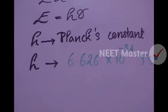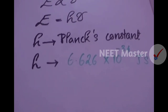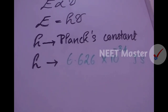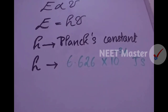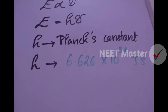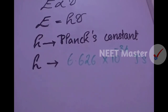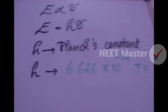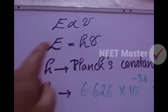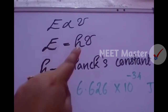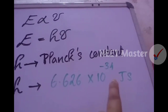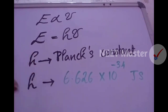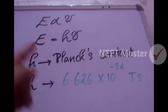The value of Planck's constant is 6.626 × 10⁻³⁴, and the unit is J·s — joule-seconds. Energy equals Planck's constant times frequency. The unit of frequency is inverse of time, that is per second.